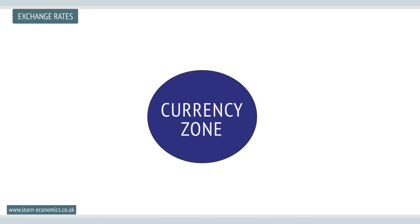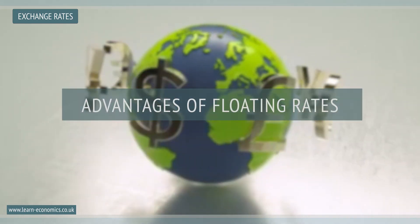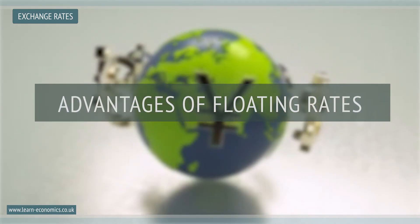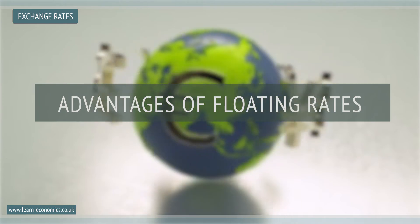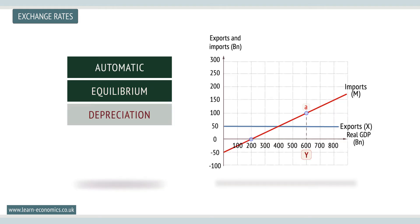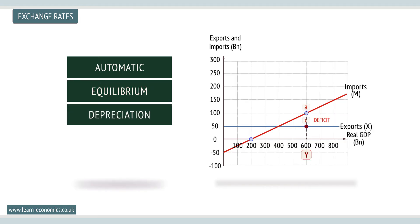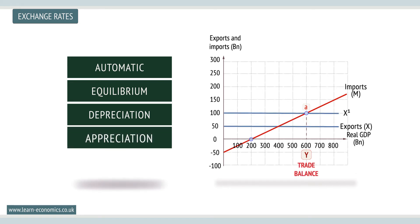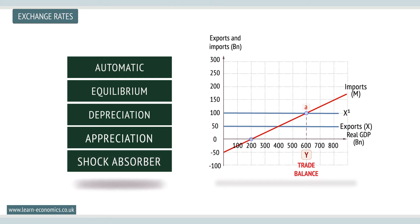A key advantage of a floating regime is the automatic adjustment of currencies in the face of a balance of payments disequilibrium. For example, trade deficits will lead to currency depreciation, which then stimulates exports in the future. Trade surpluses are reduced as currencies appreciate and imports decline. Floating rates are also a shock absorber against external shocks.